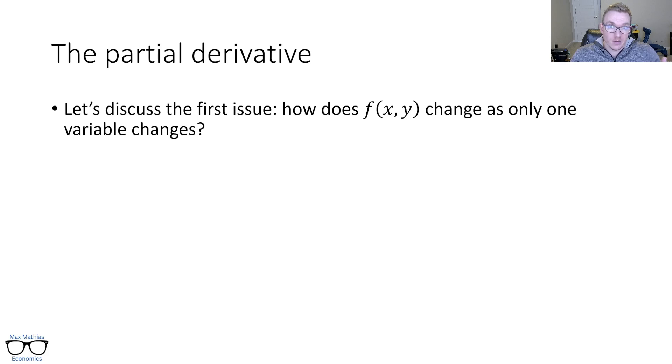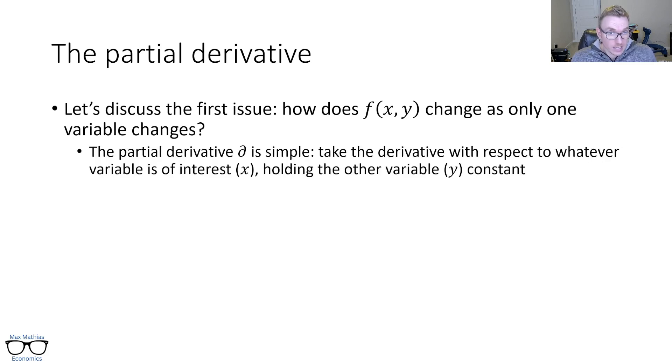So what is the partial derivative? Let's talk about how this function of x and y changes as only one variable changes. The partial derivative is actually very simple. We're taking the derivative with respect to whatever our variable of interest is. Here I'll say it's x, and you hold the other variable constant. We'll also want to know how the function changes as just y changes, holding x constant. So you'll always actually wind up having two partial derivatives, or as many partials as there are variables in your function. But at the end of the day, we're really just treating the other variable as a constant in taking the derivative.